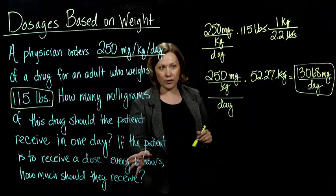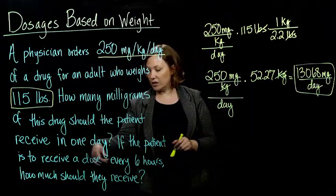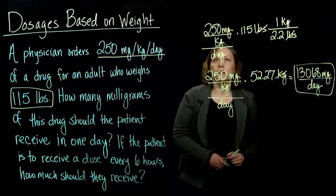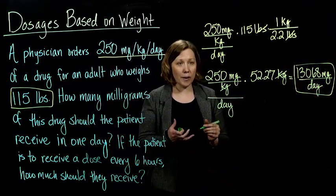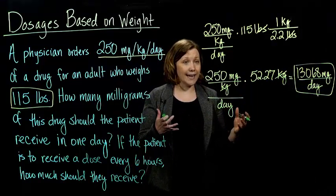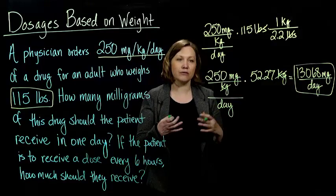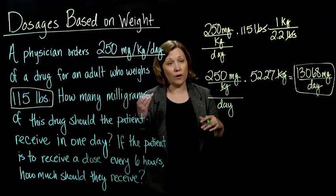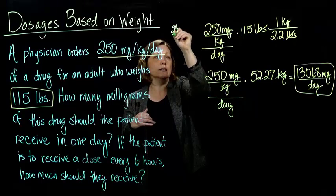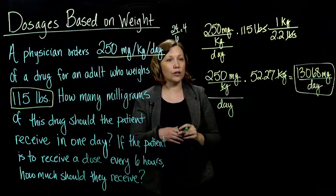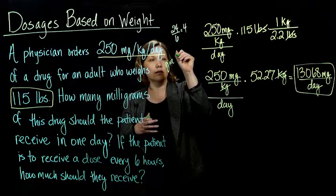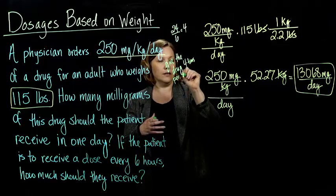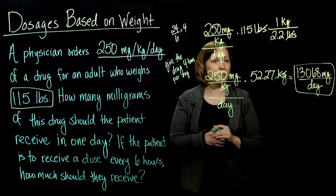But we want to answer the next question: if the patient is to receive a dose every 6 hours, how much should they receive with each dose? I have it per day, and you can go about this a couple of different ways. We can convert the per day to per hour and then multiply that by 6 for 6 hours. Or you can think about how many periods of 6 hours there are in a day — 24 divided by 6 is 4, so you're going to give the drug 4 times a day, which means you need to divide this daily dose by 4.